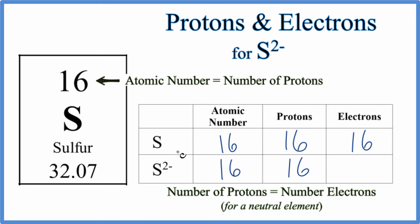For S2 minus, think of it this way: we have two extra negative charges, which are electrons. So 16 plus 2 gives us 18 electrons for the S2 minus ion.